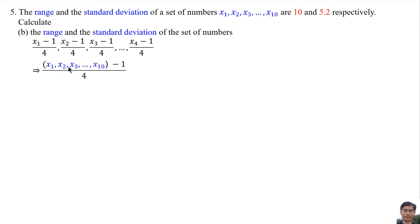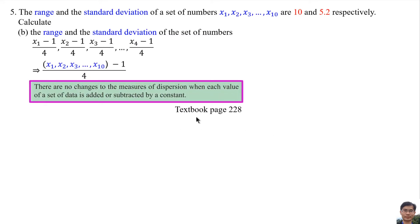For part B, each value in the set of numbers has 1 subtracted and then is divided by 4. Based on textbook page 228, when each value of a data set is added or subtracted by a constant, there is no change to the range or standard deviation. Since we subtract 1, the range and standard deviation remain unchanged at this step.